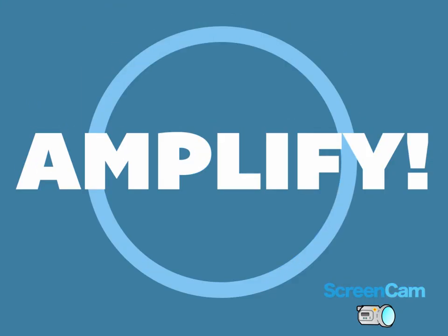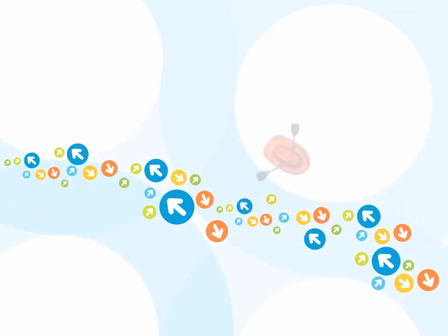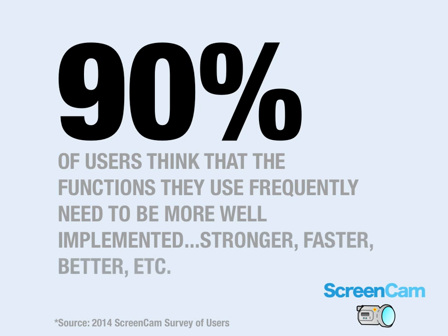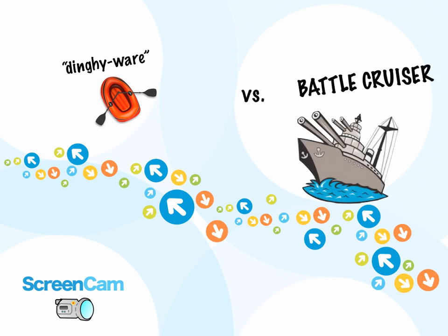Here's what's meant by Amplify. The other thing you see is inexpensive, lightweight software. The problem is they don't have the strength or the power to do a professional job when you need it. We call them dingyware — small utilities that are cheap and incomplete. You told us that functions you use frequently need to be robust and powerful, and that Windows screen capture programs don't do a good enough job. Getting back to our analogy, the cheap little dingy isn't going to cut it either.